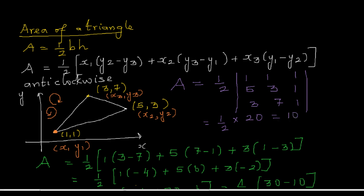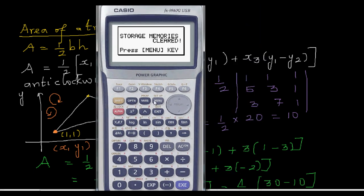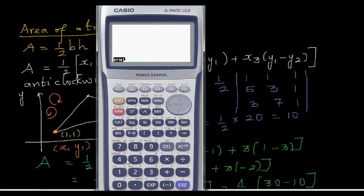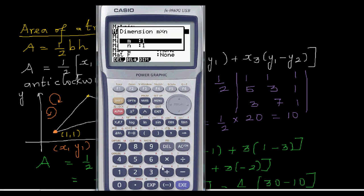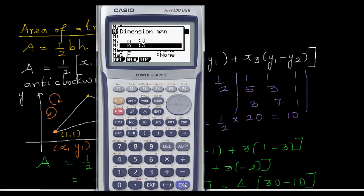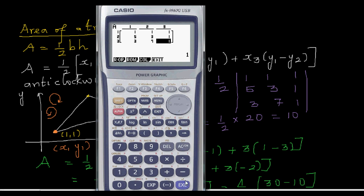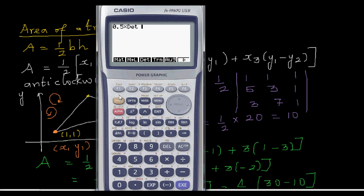Let me show how to find the determinant on a calculator. Go to menu, then matrix. Select matrix A as a 3 by 3 matrix and enter the numbers: 1, 1, 1, 5, 3, 1, 3, 7, 1. Then exit and enter 0.5 times the determinant of matrix alpha A. The result equals 10, confirming the determinant of the matrix is 20.